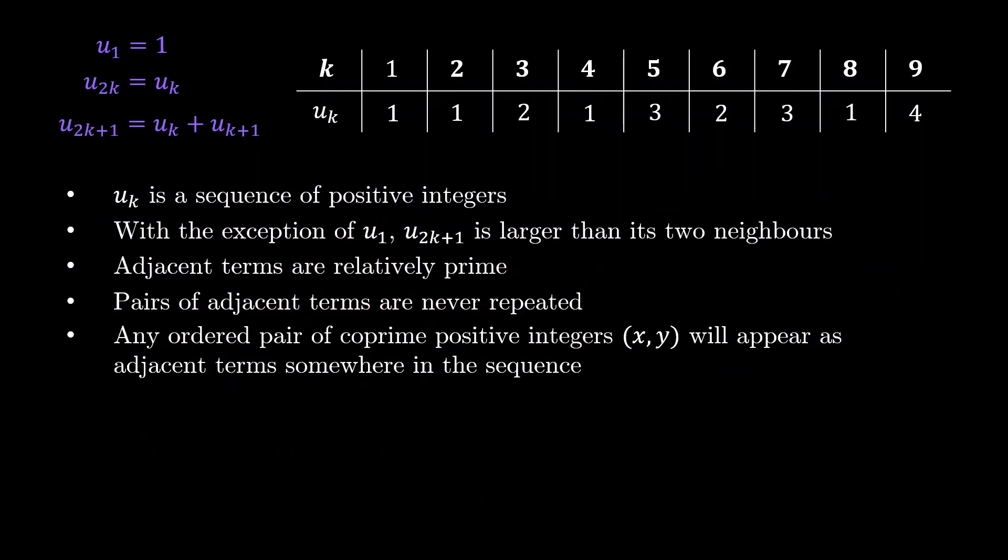So, we have just proved a sequence of 5 statements, and together, this allows us to conclude that every positive rational number will appear exactly once in the sequence.